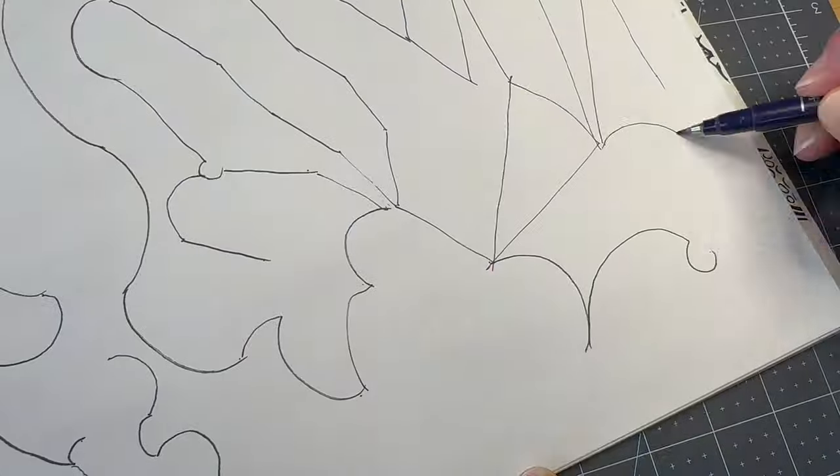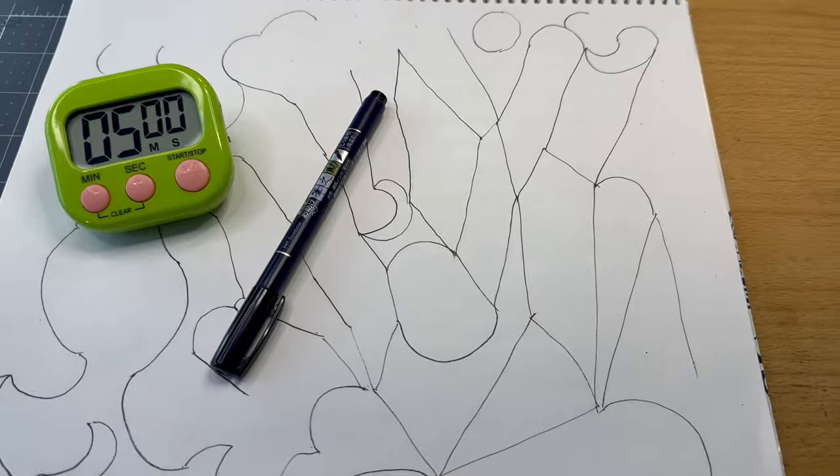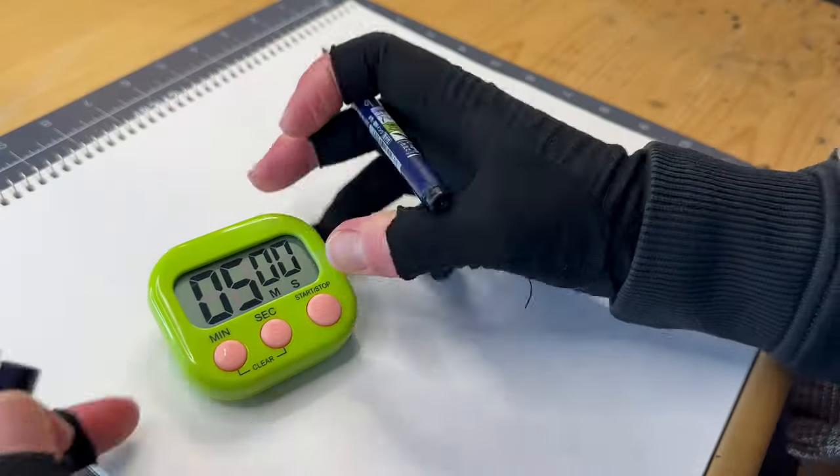Keep connecting dots, fill the page, add more dots if needed. Continue with curved lines until the five minutes is up. On a new page, again set the timer to five minutes, press start.